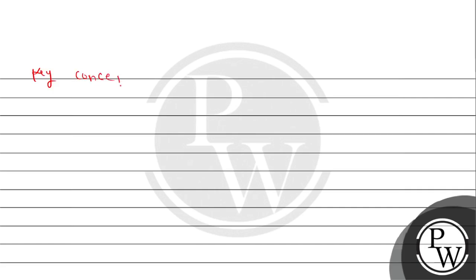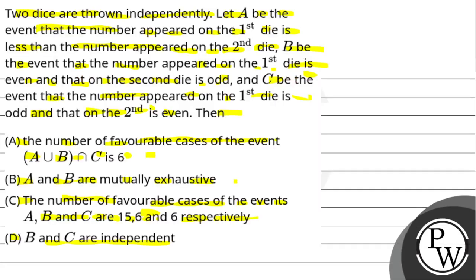Let's see the concept. Independent event: P(A∩B) = P(A)·P(B). Exhaustive event: P(A∩B) = 0. If A intersection B is empty, they are exhaustive. Two events are exhaustive if their union covers the entire sample space.